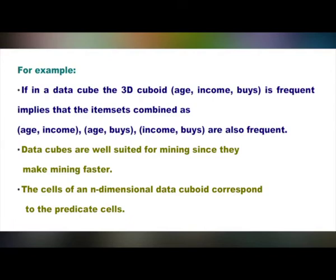For example, in a data cube, the 3D cuboid which represents age, income, and vice is frequent implies that the item sets combined as age and income, age and vice, income and vice are also frequent. Data cubes are well suited for mining since they make mining faster. The cells of an n-dimensional data cuboid correspond to the predicate cells.